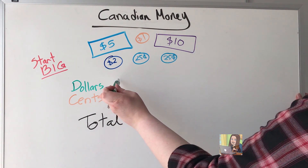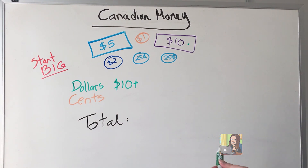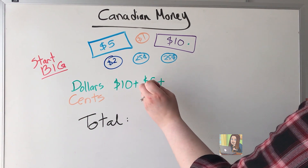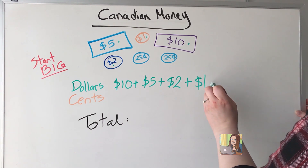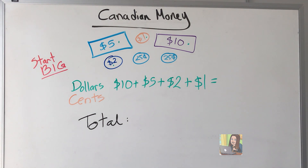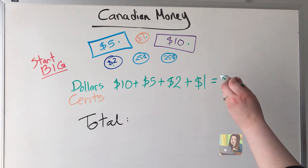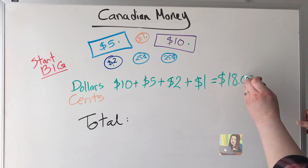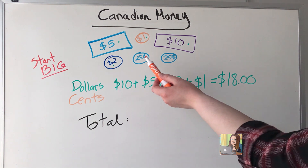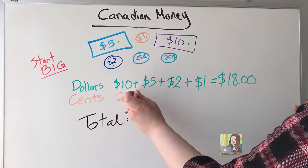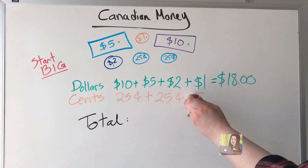The biggest bill here is $10. The next biggest would be the $5. Then I have the $2 and the $1. We're going to add them together.